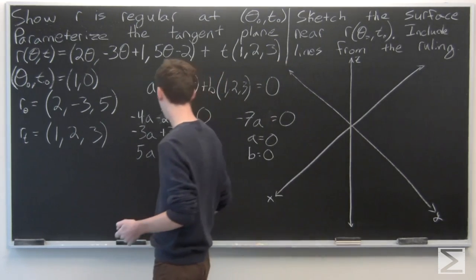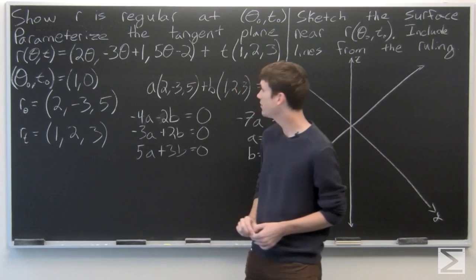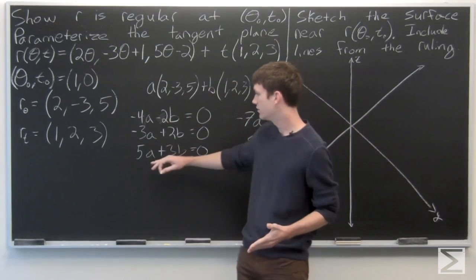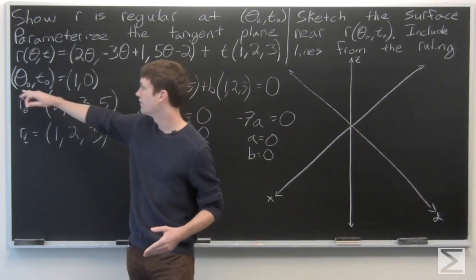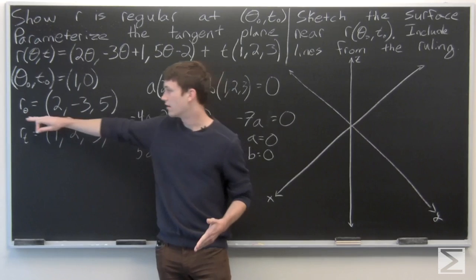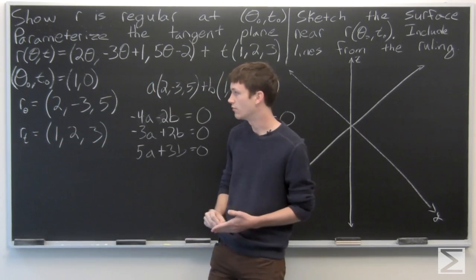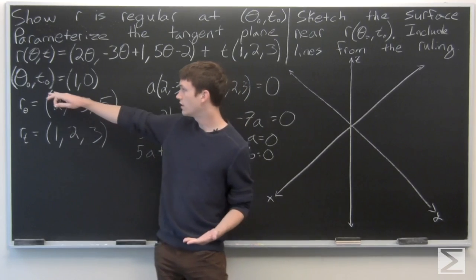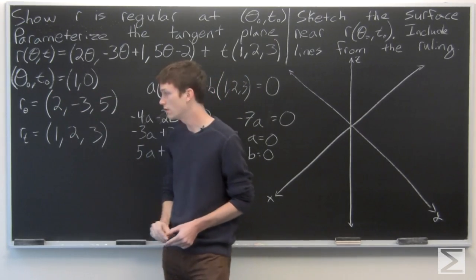Now we can go ahead and parameterize the tangent plane at the point r(θ₀, t₀). Notice that our partial derivatives are just constant terms, so the partial derivatives will be the same at any point — and likewise at the point (1, 0).